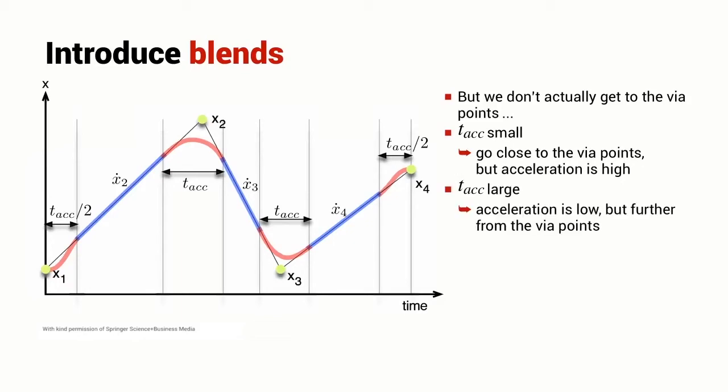If the acceleration time is large then the acceleration of the robot is much lower but we're going to miss the via points by a larger amount. This is a fundamental engineering trade-off between accuracy and acceleration.